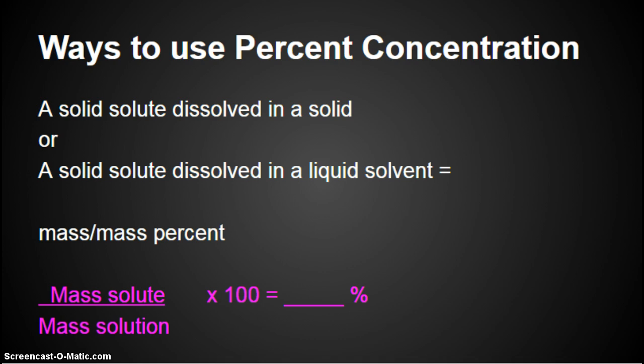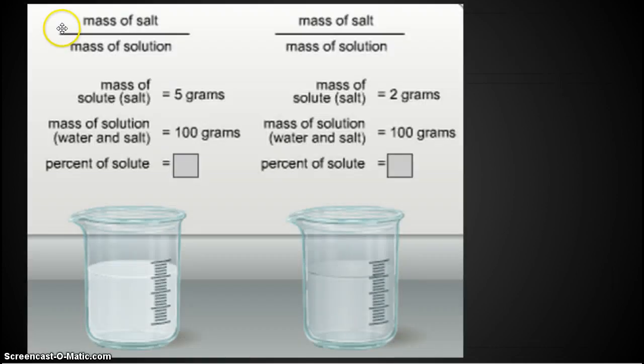So let's go ahead and use our formula. We have the mass of salt divided by the mass of solution. If we just look at these two pictures, which one is more concentrated, the left or the right? The left beaker is more concentrated, you can tell because you can see more of the solute, in this case the white salt.